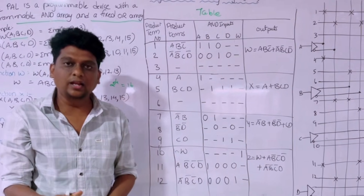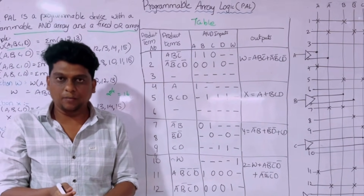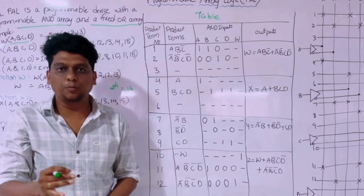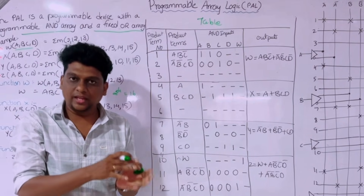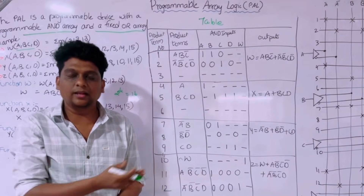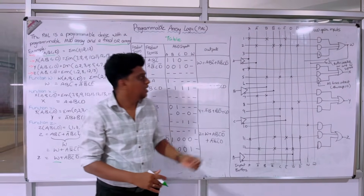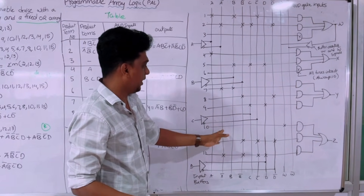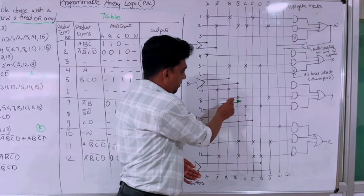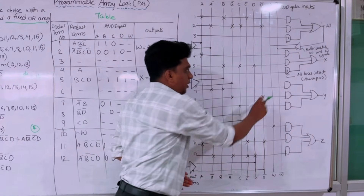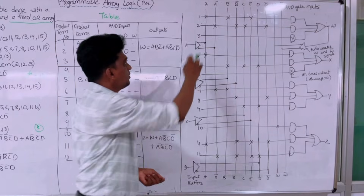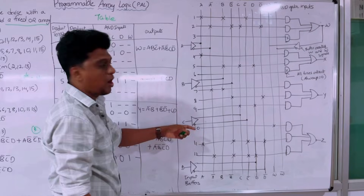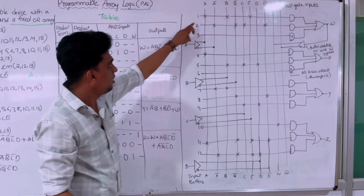The programming table has 10 input variables: A, A bar, B, B bar, C, C bar, D, D bar, W, and W bar — because each variable and its complement are counted as inputs. After drawing the programming table, we move to the design. We draw the input lines: A, A bar, B, B bar, C, C bar, D, D bar, W, W bar. Then lines 1 through 12 represent the product terms, with A, B, C, D as the input buffer elements.